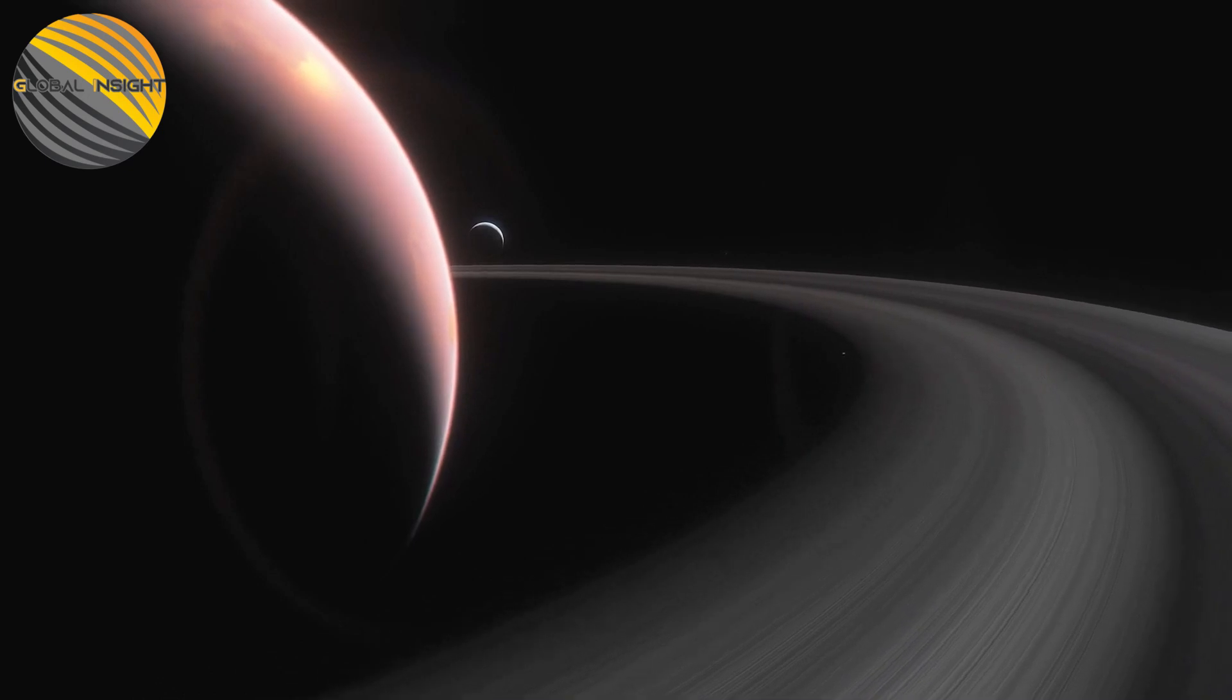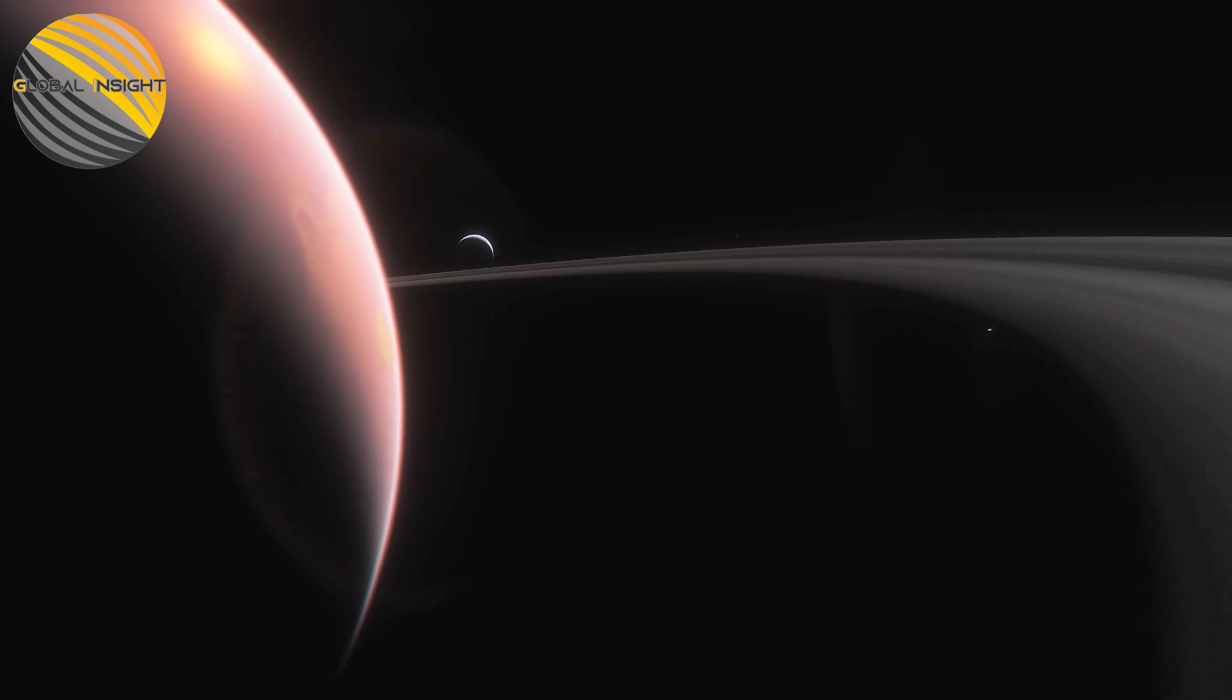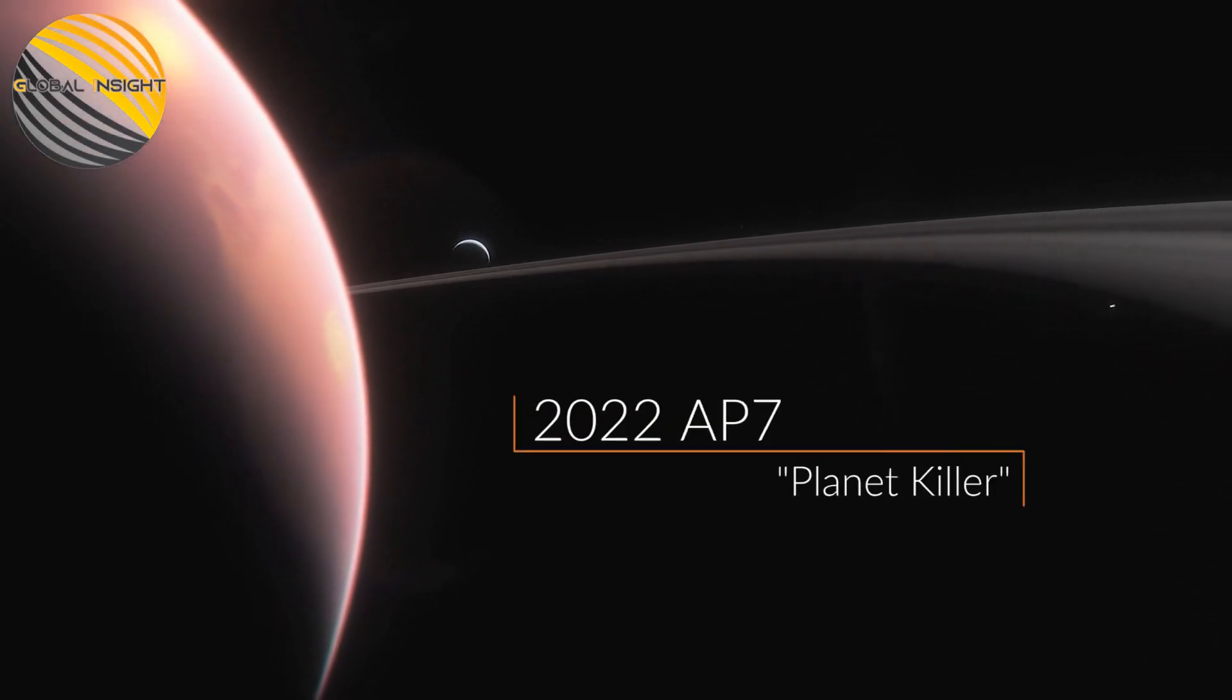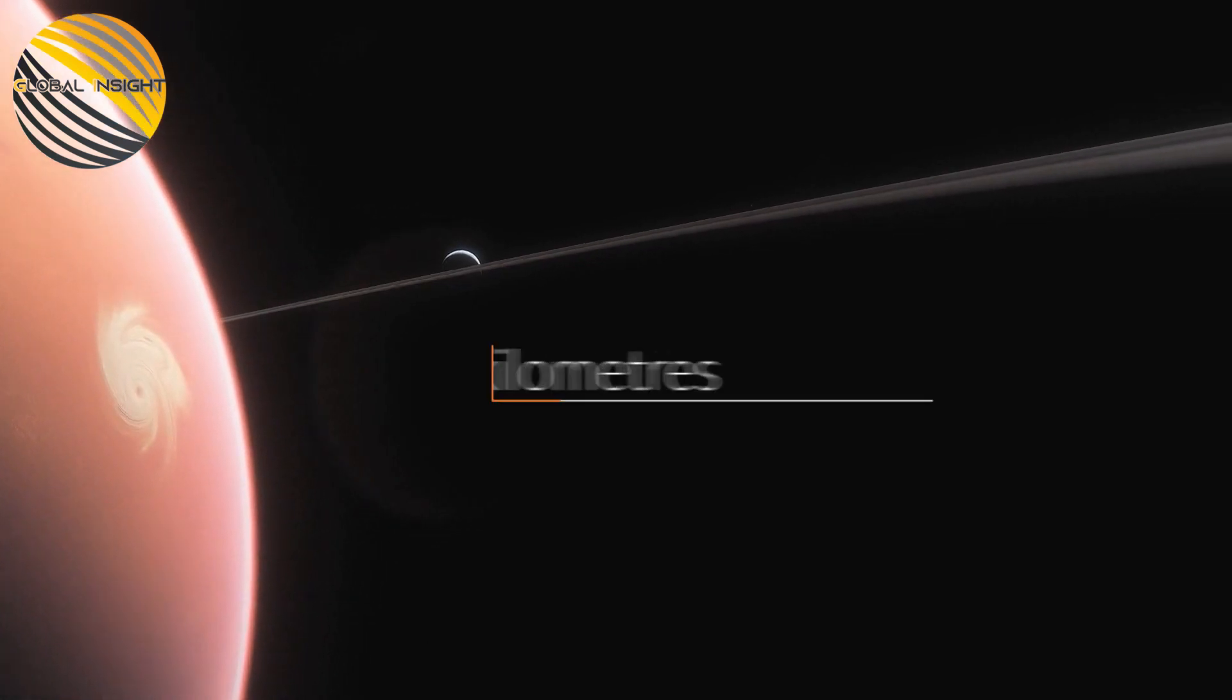One of several large space rocks that astronomers have recently discovered close to the orbits of Venus and Earth is the potentially hazardous asteroid 2022 AP7, which measures 1.5 kilometers by 0.9 miles.